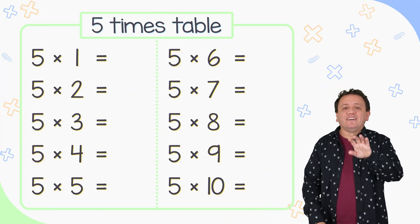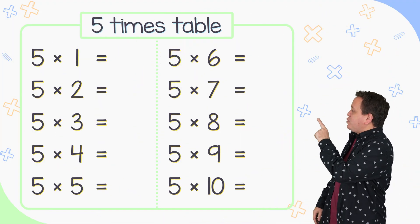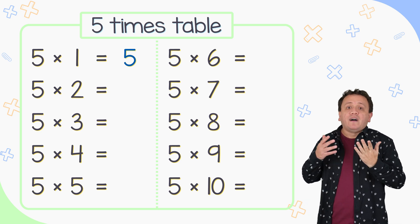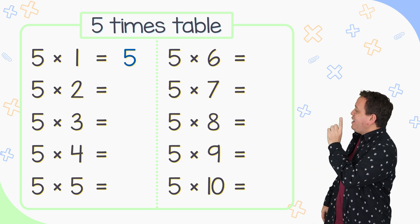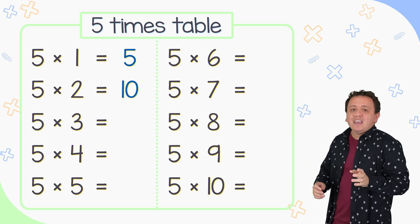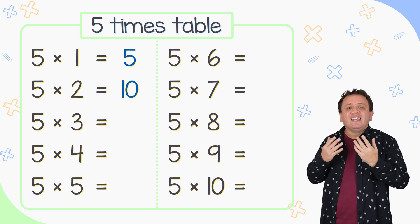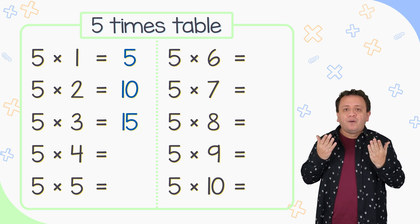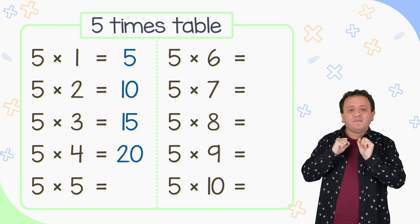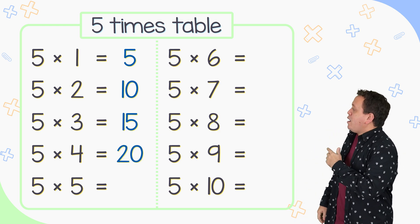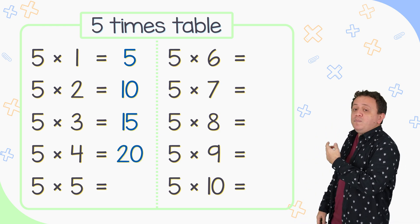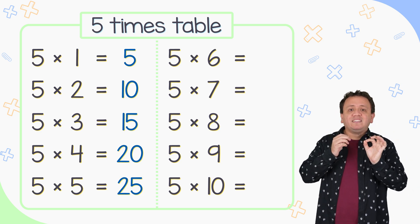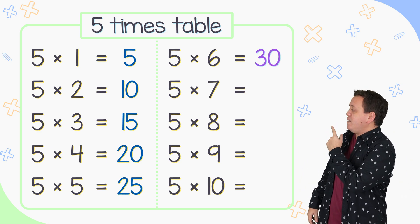It's time to study the 5 times table. 5 times 1 is equal to 5. And 5 times 2 is 10. 5 times 3 equals 15. And 5 times 4 equals 20. 5 times 5 is equal to 25 and 5 times 6 equals 30.